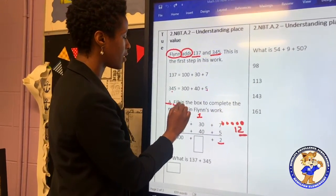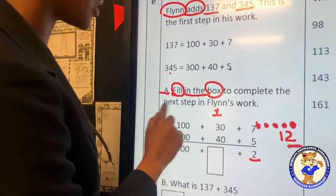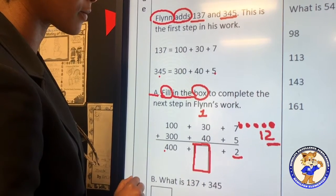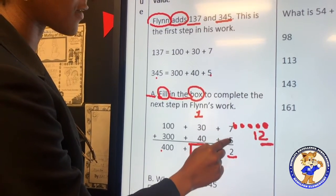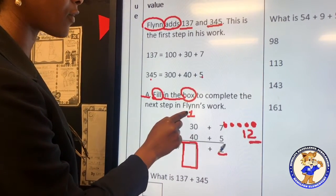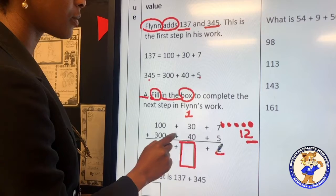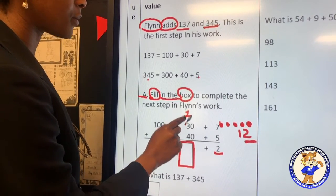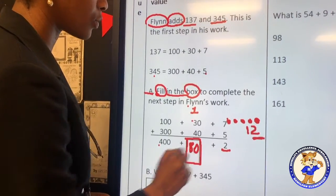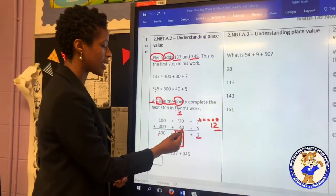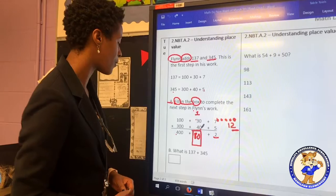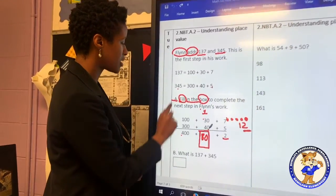So in order for us to fill in the box to complete the next step in Flynn's work, we need to understand that an answer must go here. So, 7 plus 5, we understand it's 12. We put our 1 in the ones place, and we carry over that 1 ten. 4 plus 3 would give us 7. 7 plus 1 more number would give us 8. So, the answer here would be 80 because we must also keep the zeros here, since it's in expanded form. Now, this takes care of part A.